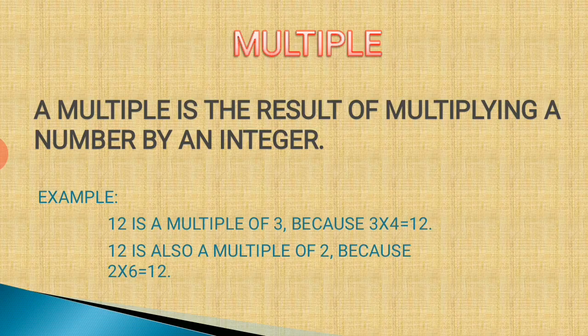Next is multiples. A multiple is a result of multiplying a number by an integer. For example, 12 is a multiple of 3 because when we multiply 3 by 4 we get 12. 12 is also a multiple of 2 because 2 into 6 is 12.